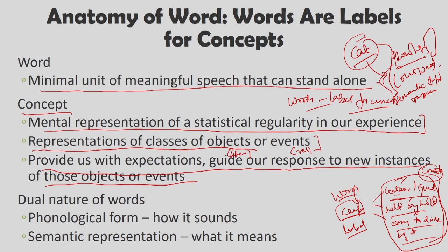It is not always the case that concepts have a label — sometimes you have concepts which have no label. There are several objects in this world which have no label as such. We know they exist but we cannot provide a label to them, possibly because they house a number of abstract properties and are not clear matches to existing categories. So it is possible for a concept to have no label.